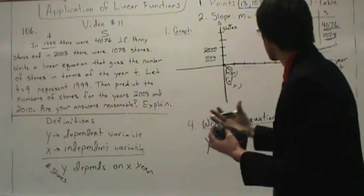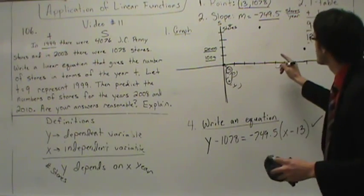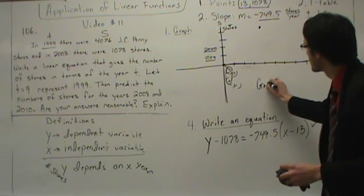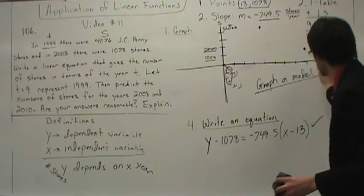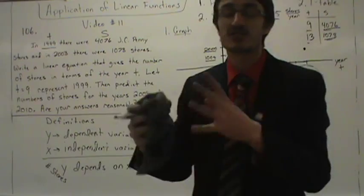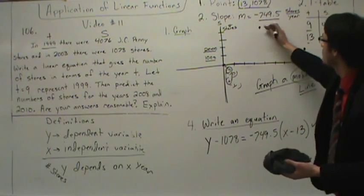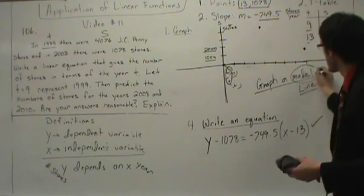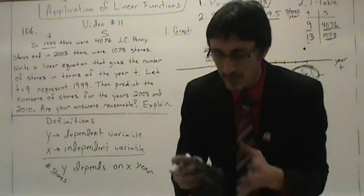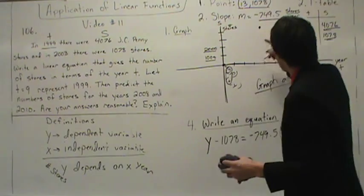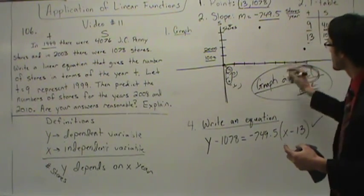These points do not form a line, but they determine the direction of a line. When I say 'graph a model,' a model is a line. When I tell you to graph a model, I'm saying draw a line — and the line will not necessarily pass through the points. In this case, our model will pass through these points because there are only two points. So graph a model of this situation — go ahead and draw the line.